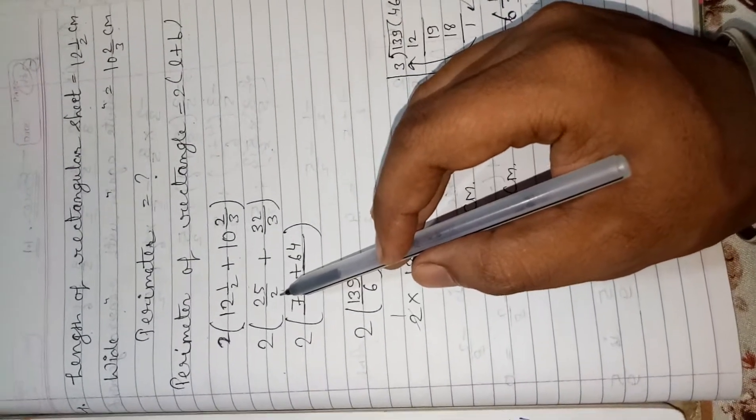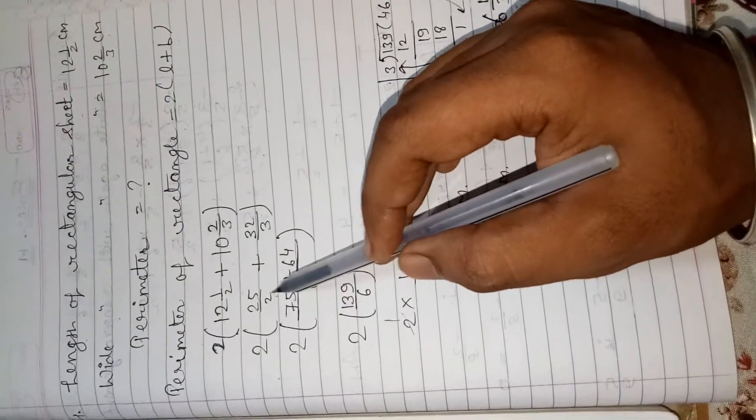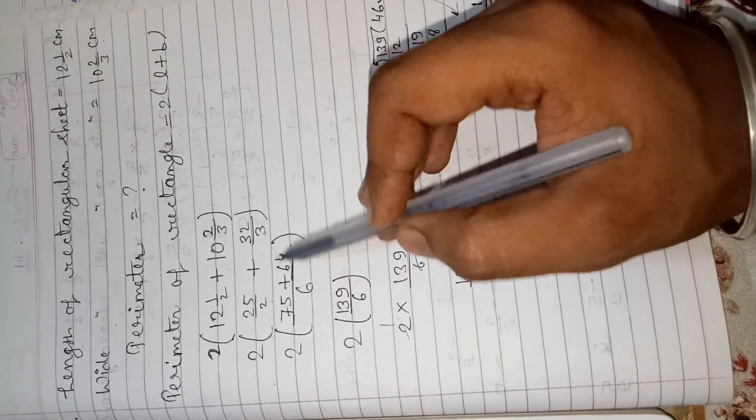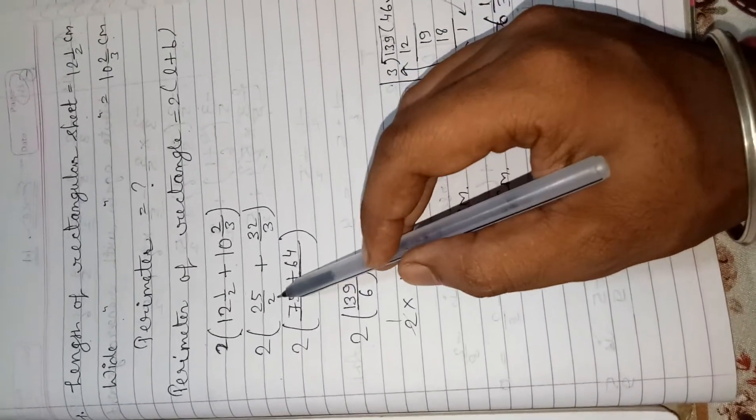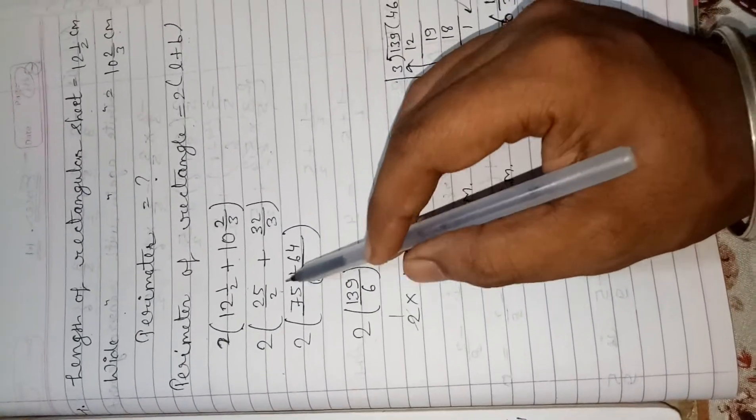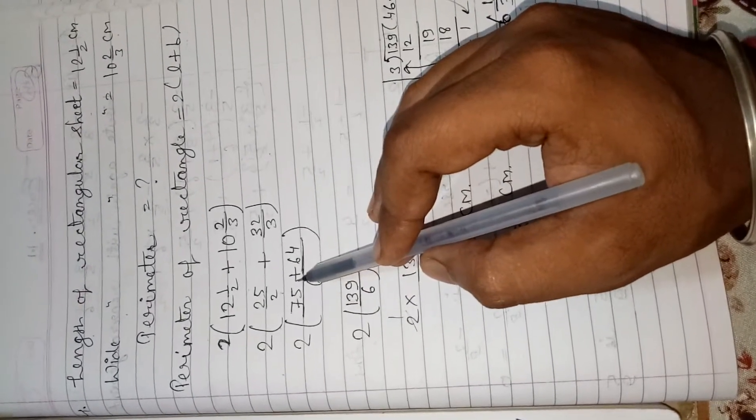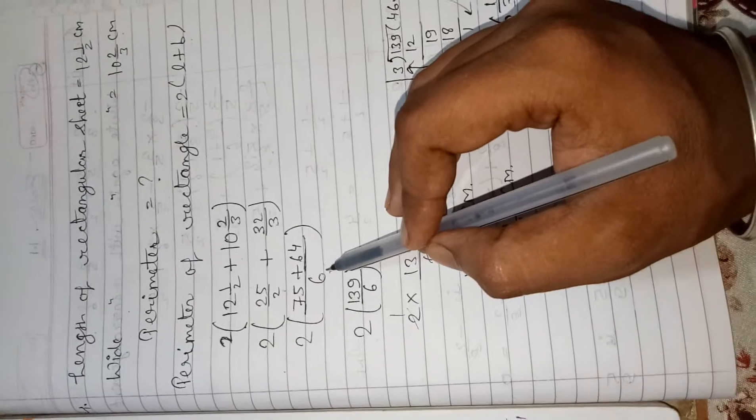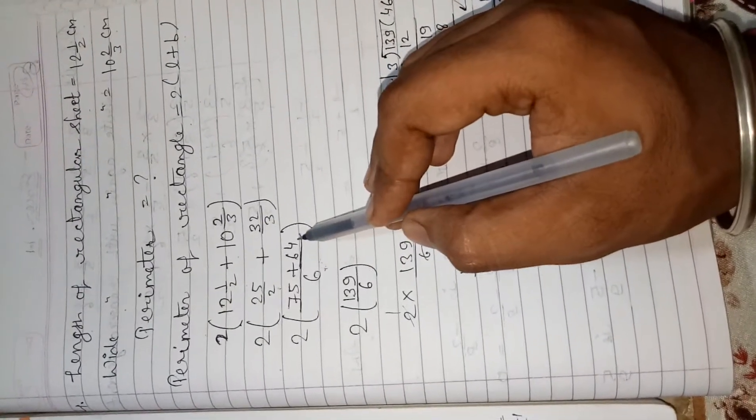Now take LCM of 25 upon 2 plus 32 upon 3. Take LCM of 2 and 3 is 6. 2 divide by, 2 times 3 is 6. Then 25 times 3 is 75. Plus 3 divide to 6, 2 times. Now this 2 multiplied to numerator 32, 32 times 2 is 64.